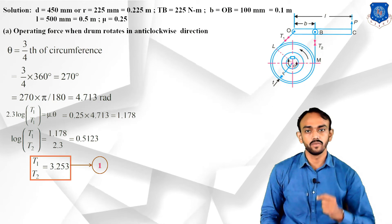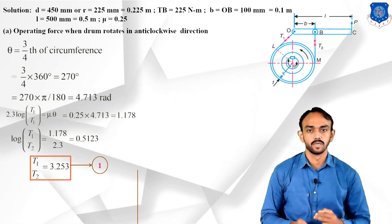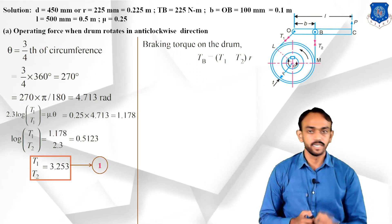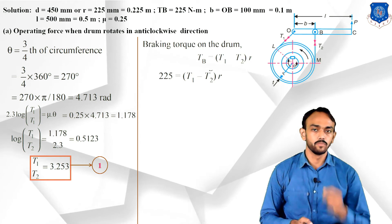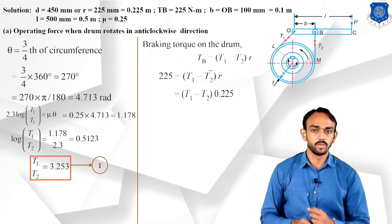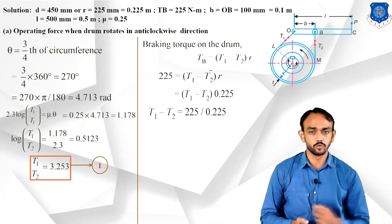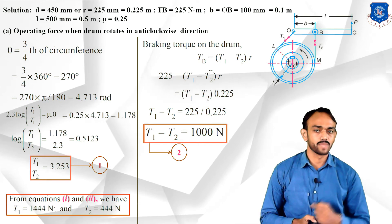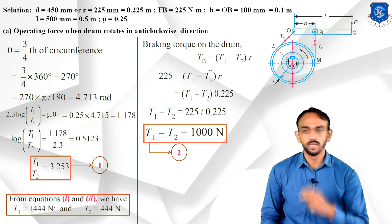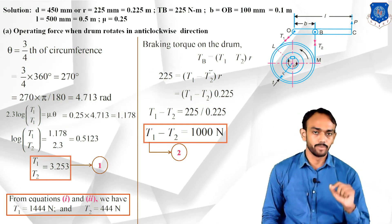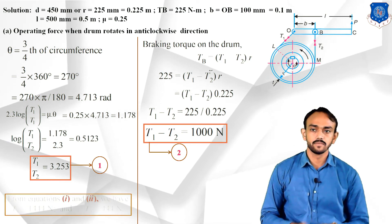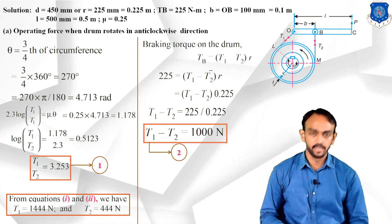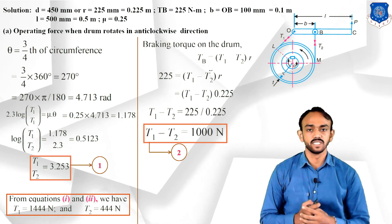Now apply the braking torque formula: Braking Torque = (T1 − T2) × r. Substituting: 225 = (T1 − T2) × 0.225, which gives T1 − T2 = 1000 N — call this Equation 2. Solving Equations 1 and 2 simultaneously: T1 = 1444 N and T2 = 444 N.